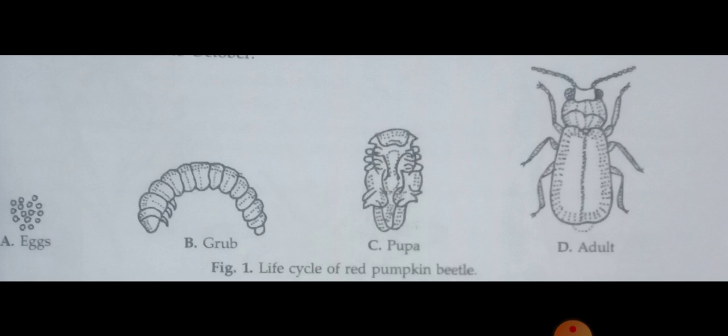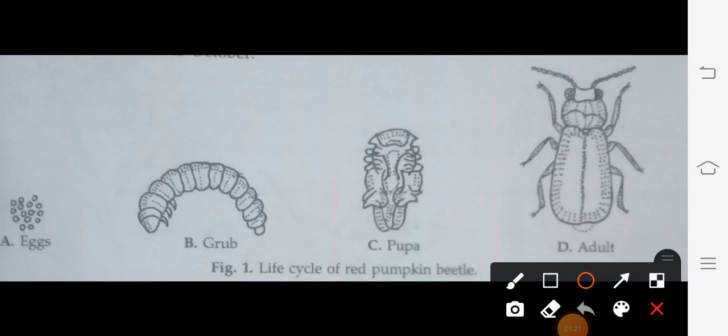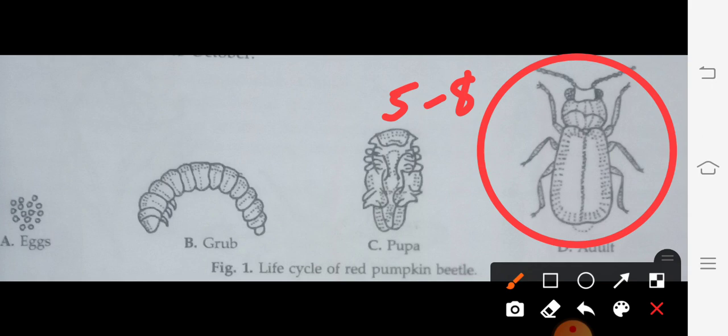The general appearance: the adult beetle is oval and 5 to 8 mm long. This is the adult beetle and its body is 5 to 8 mm long, and 4 mm wide. Its width is 4 mm.